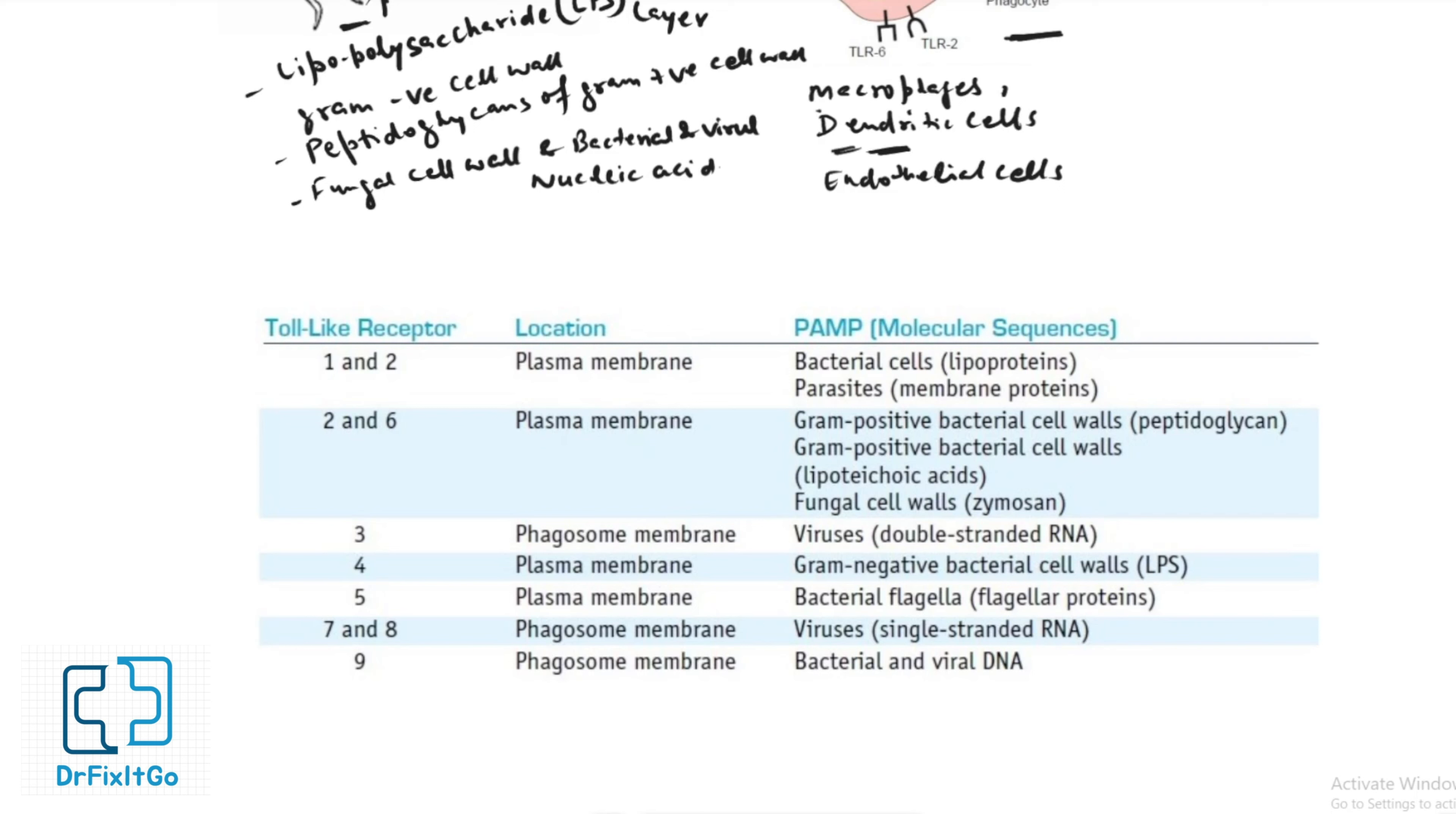The TLR family in humans consists of at least ten members, each working to mediate a specific response to distinct PAMPs. Specific TLRs are located on immune defense cells' plasma membranes and phagosome membranes.